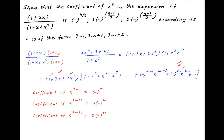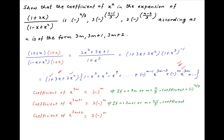Therefore, in the first case, when n is of the form 3m or m is equal to n upon 3, then the required coefficient is equal to minus raise to the power m, which is equal to minus raise to the power n upon 3. Similarly, if n is equal to 3m plus 1 or m is equal to n minus 1 upon 3, then the required coefficient is equal to 3 times minus raise to the power m, which is equal to 3 times minus raise to the power n minus 1 upon 3.